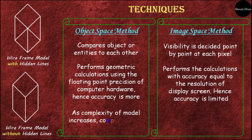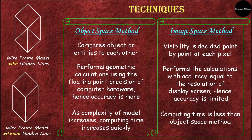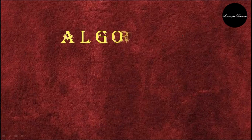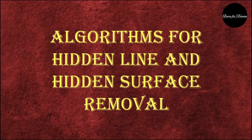In the object space method, as the complexity of the model increases, the computing time also increases because it has higher accuracy. The image space method takes less computing time than the object space method. Now let's see the algorithms used for hidden line and hidden surface removal.